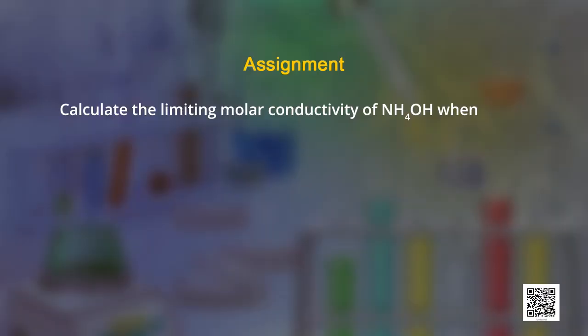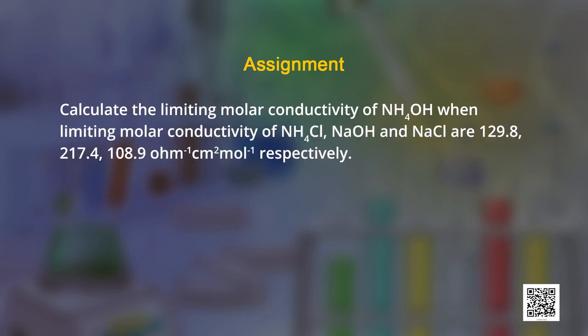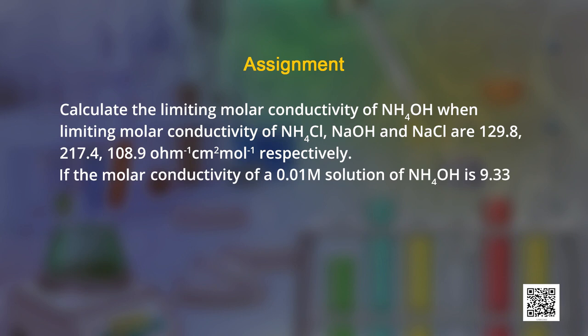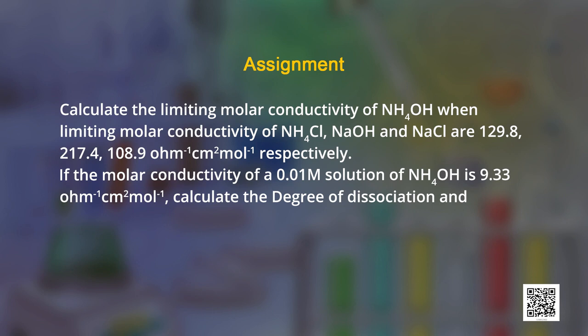Let me give you a numerical based on today's concepts. Calculate the limiting molar conductivity of ammonium hydroxide when limiting molar conductivities of ammonium chloride, sodium hydroxide, and sodium chloride are respectively given. If the molar conductivity of a 0.01 M solution of ammonium hydroxide is 9.33 ohm⁻¹ cm² mol⁻¹, calculate the degree of dissociation α and dissociation constant Ka for ammonium hydroxide.